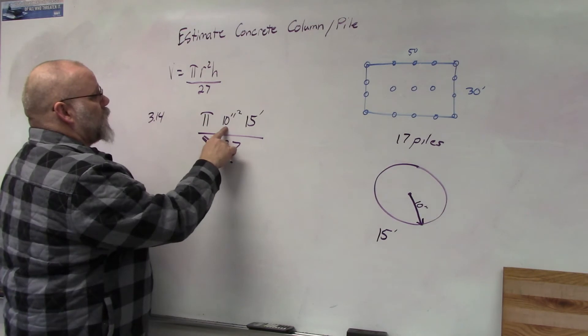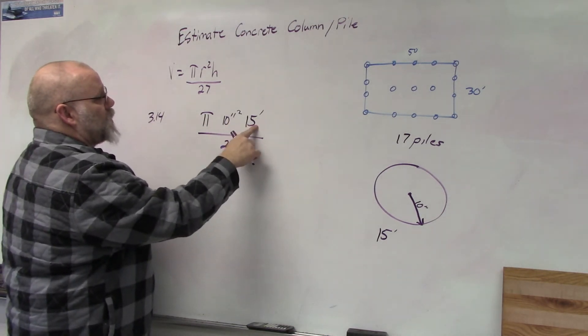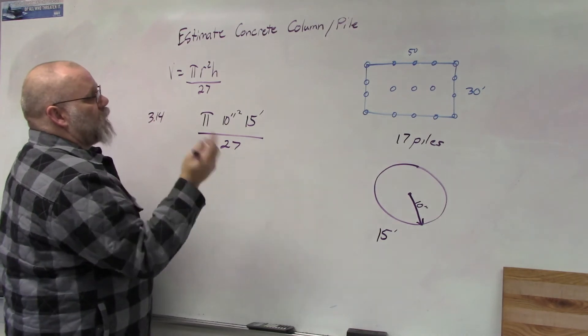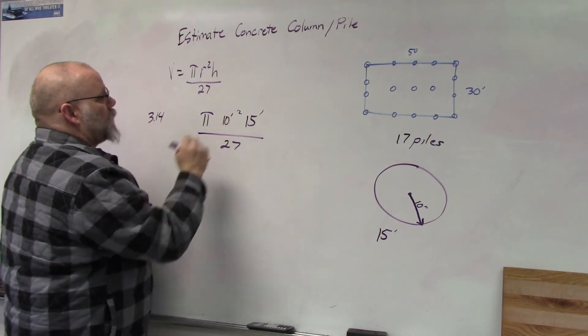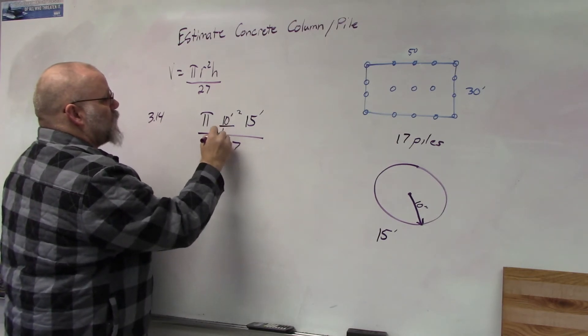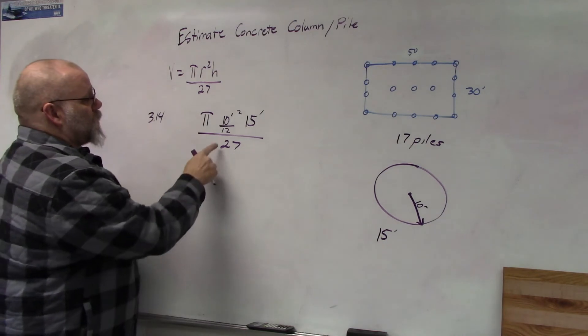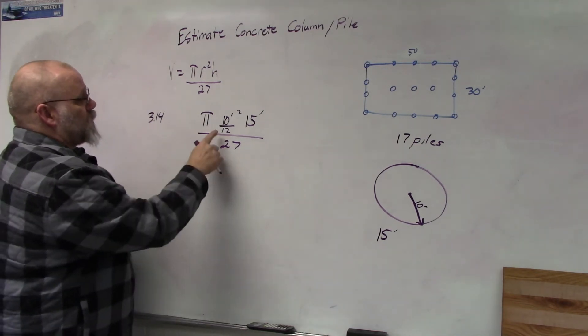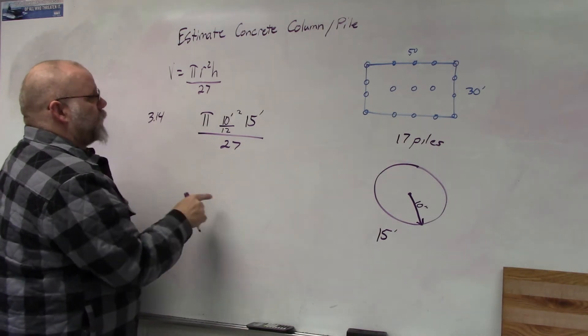So now we go up in here and we look, we can't multiply these inches times these feet, so we need to have them in feet. So we need to convert 10 inches into feet. So we're going to divide it by 12, so now we have 10 twelfths of a foot squared.